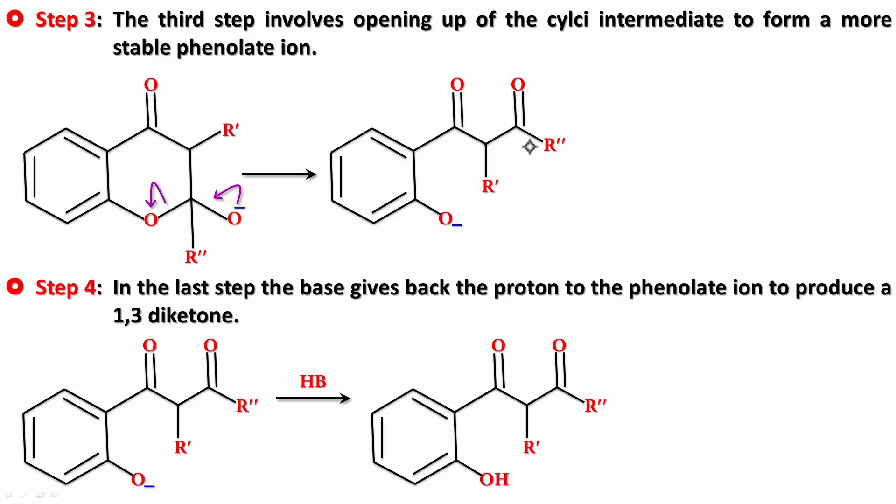This is a 1,3-diketone forming. As I said earlier, this reaction is very similar to Claisen condensation, which we'll cover in later videos. That's the Baker-Venkataraman rearrangement. I hope you understood what this reaction is about. If needed, please watch it again.